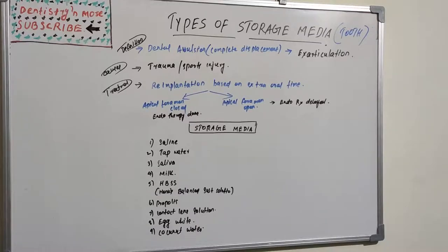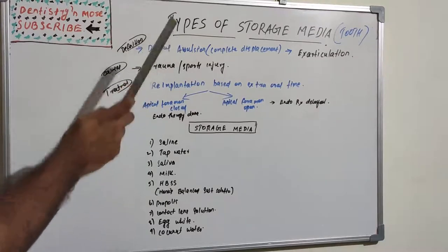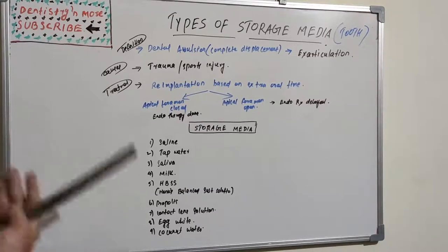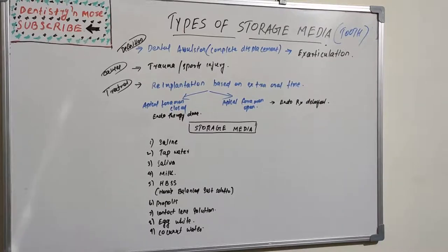Dental avulsion is nothing but complete displacement of a tooth from its socket in alveolar bone. It is also known as ex-articulation and is most commonly associated with maxillary teeth or upper teeth. We may face, or the kids may face, trauma to the face and mouth from sports or other accidents which can cause teeth to fracture, loosen, or even be knocked completely out of its socket.